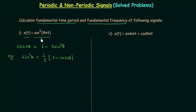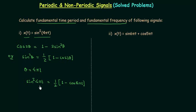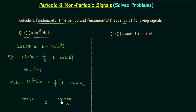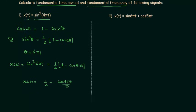Here θ = 4πt. Therefore sin²(4πt) = (1/2)(1 − cos(8πt)). Since sin²(4πt) is equal to signal x(t), we have x(t) = 1/2 − cos(8πt)/2. Opening the bracket, 1/2 is the DC value.